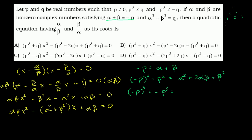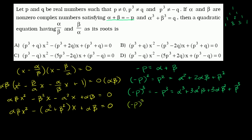So alpha plus beta to the third power equals alpha cubed plus 3 alpha squared beta plus 3 alpha beta squared plus beta cubed — decreasing the exponent on alpha and increasing on beta each time. This is interesting because we can simplify it. We have negative p cubed equals alpha cubed plus beta cubed, which are those two terms — and I separate those out because that's our q.